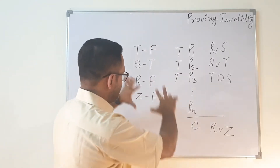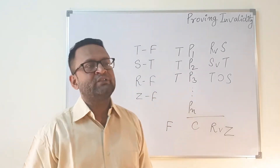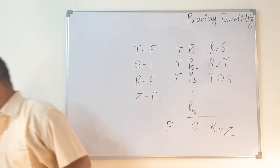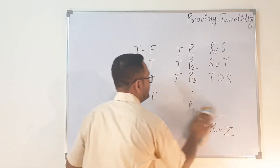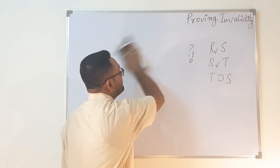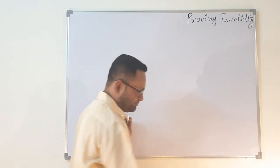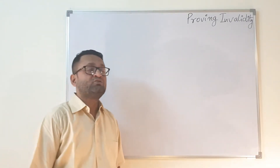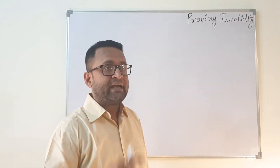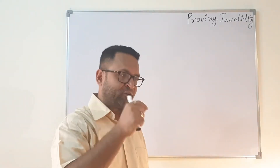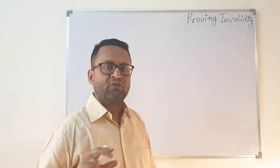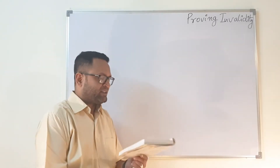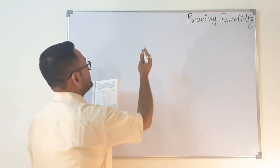The theory may seem a bit abstract right now, so let us take a question from your book. The key thing to remember is: first, try to make the conclusion false; then retain the values of the variables in the conclusion, and use those along with free values for the other variables to try to make the premises true.